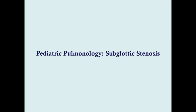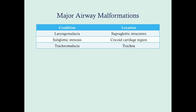This talk covers subglottic stenosis, one of our major airway malformations. Importantly, these aren't necessarily congenital — some are congenital, but subglottic stenosis can also occur secondary to injury or an inflammatory process. These can be obstructions and acquired lesions as well. Subglottic stenosis tends to be located in the cricoid cartilage region.